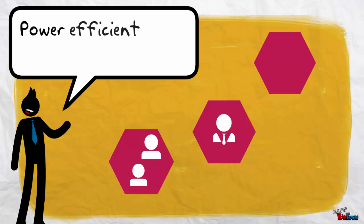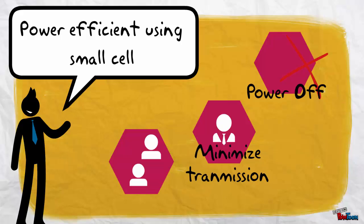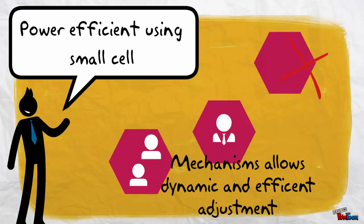Power efficiency using small cells can be achieved by: 1. Completely switch off the cell when not in use. 2. Minimize the transmission of always-on signals. 3. Use one carrier when traffic load is light. All are implemented through mechanisms to allow dynamic yet efficient adjustments.